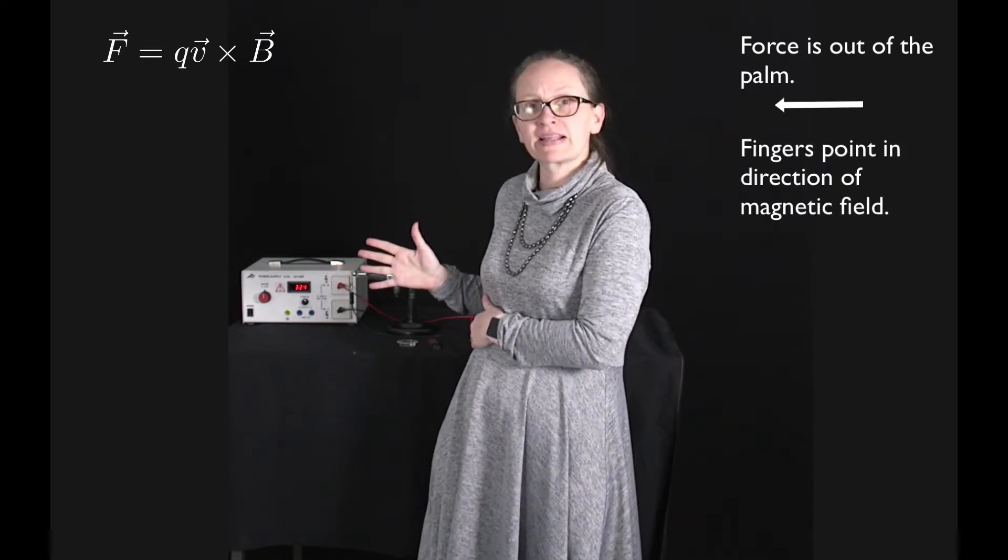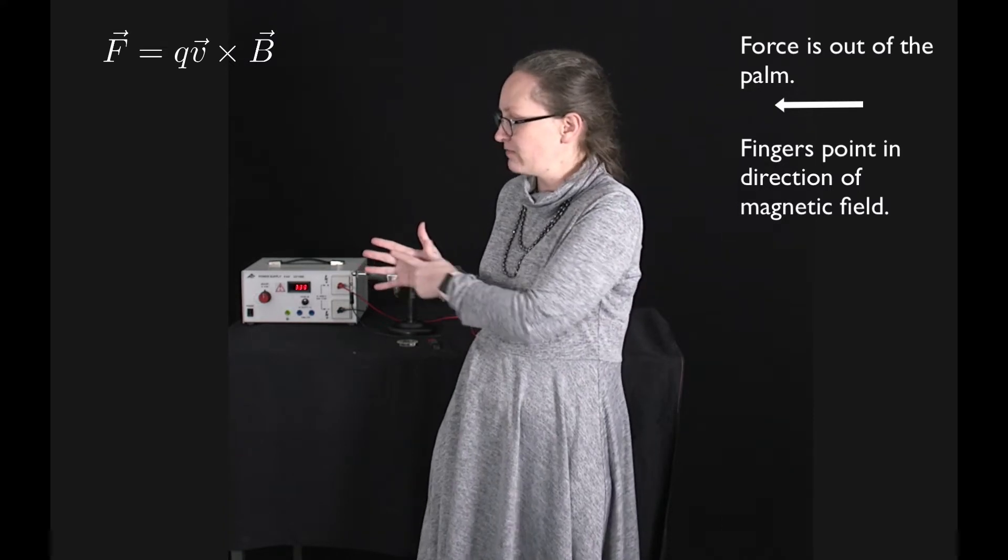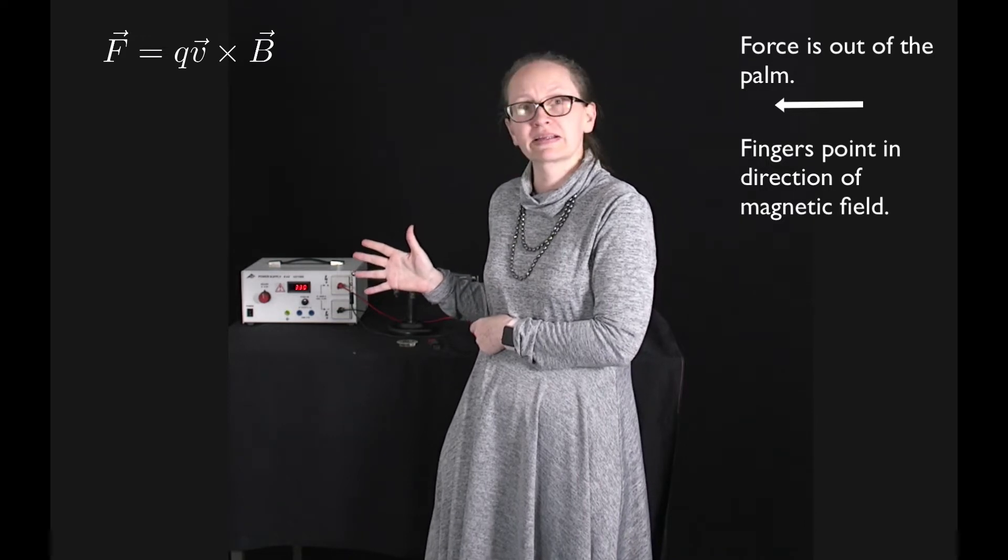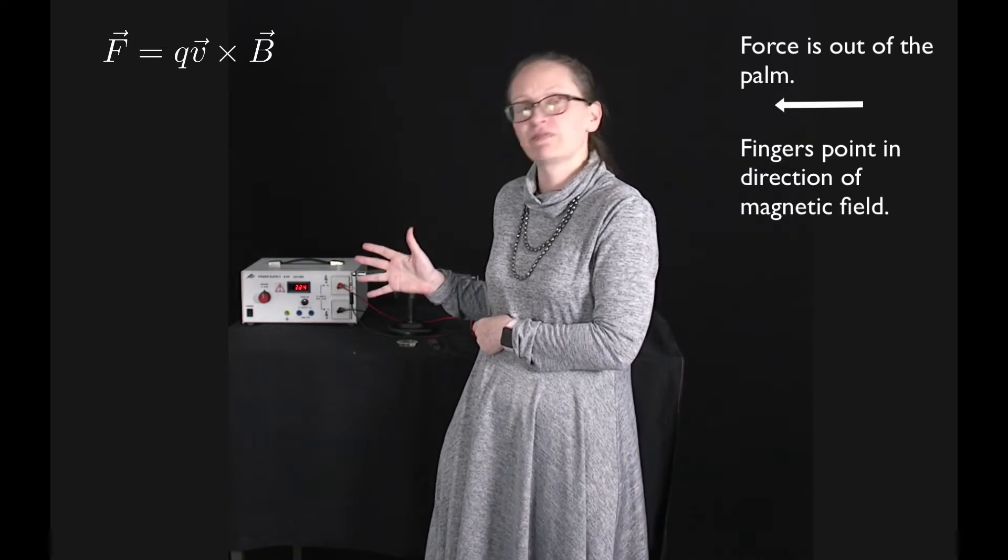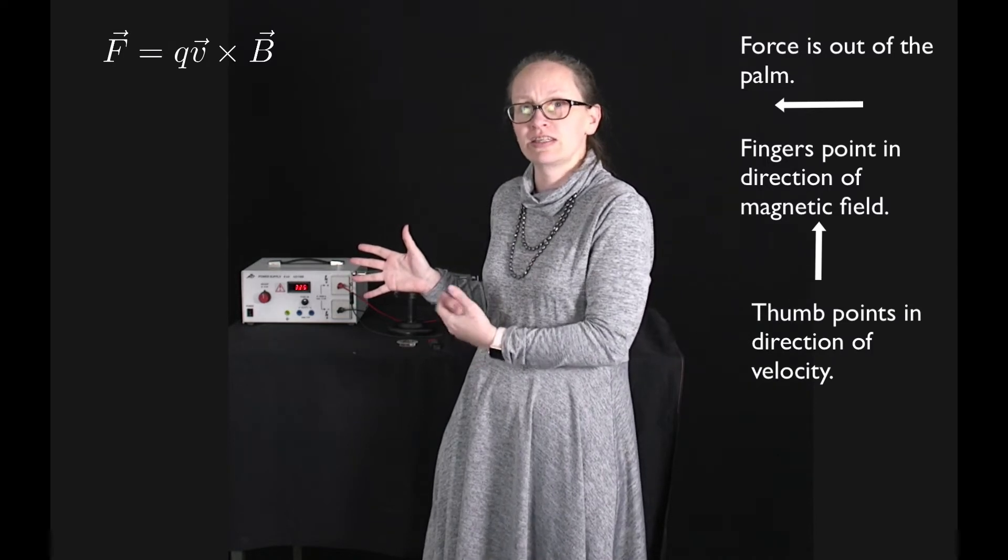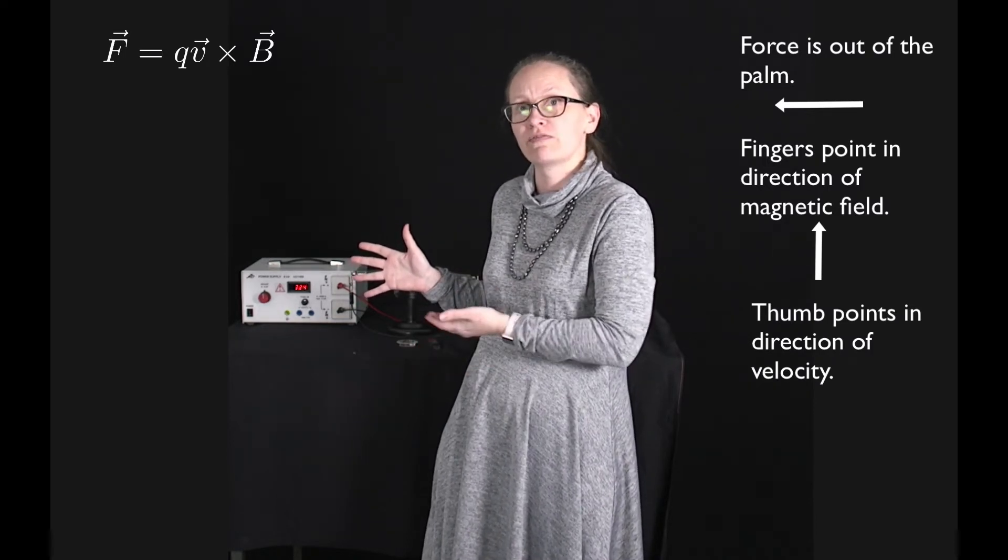The direction of the magnetic field lines is the direction my fingers are pointing in. How I remember that is I've got lots of fingers and there's usually lots of magnetic field lines. So these are the magnetic field lines, and then my thumb represents the velocity, the direction of the velocity of the particle.